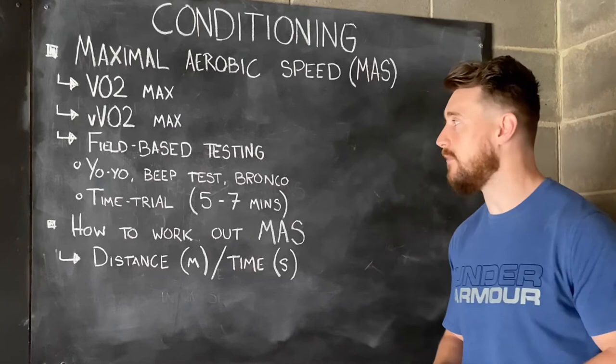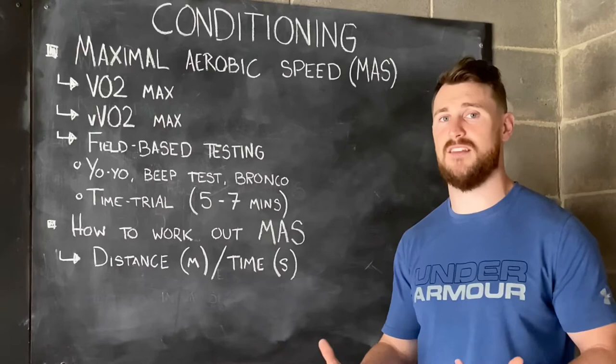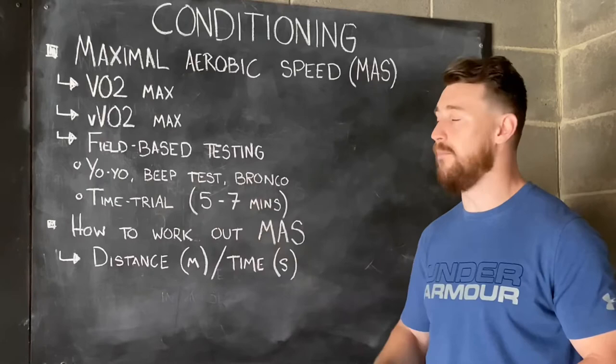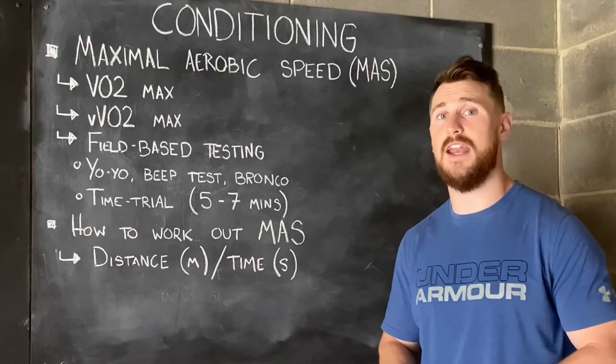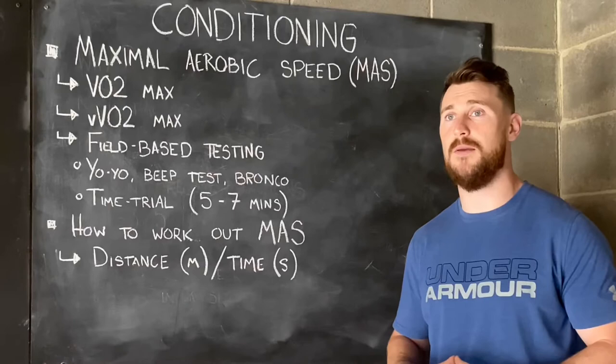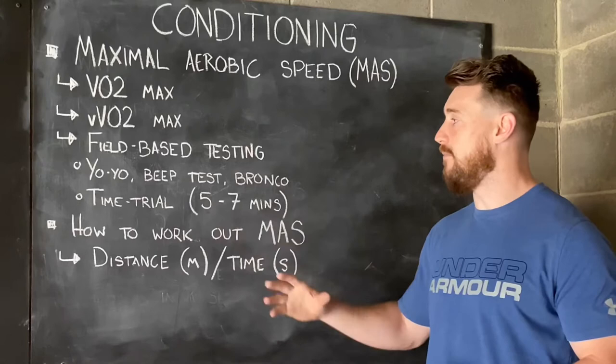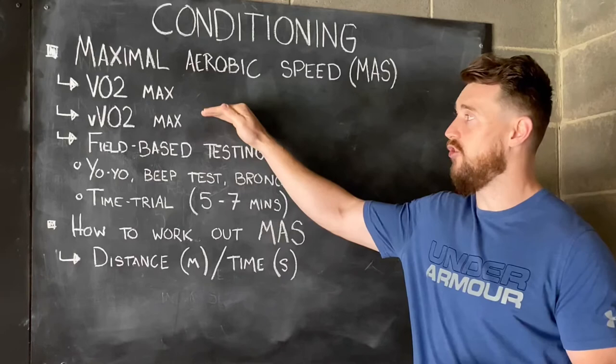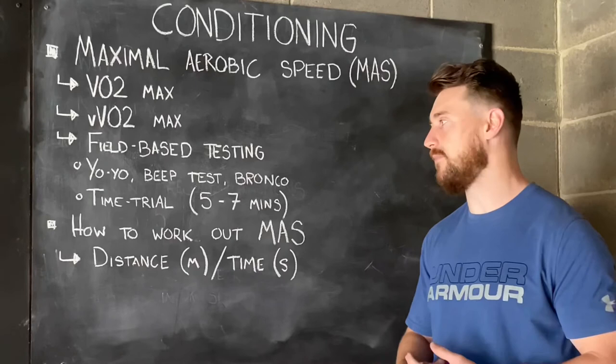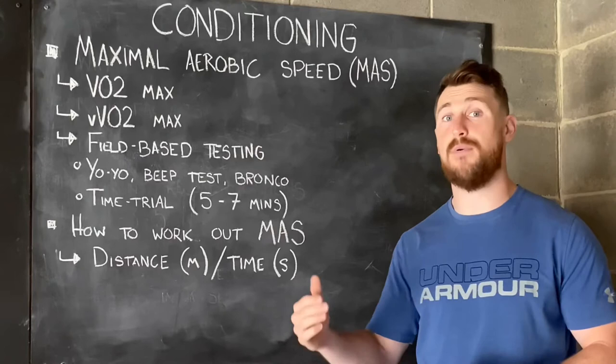There are a few different field-based tests that we can use for estimating maximal aerobic speed. You may be familiar with the yo-yo test, the beep test, or even the Bronco shuttle running test, and all three of those can be effectively used for estimating maximal aerobic speed. However, my preference — and probably the most well-supported one in the research — is simply a time trial in duration between five and seven minutes. In laboratory testing we see that the five-to-seven minute range has around a 0.94 correlation with true VVO2max testing in a physiological lab when done in the field.